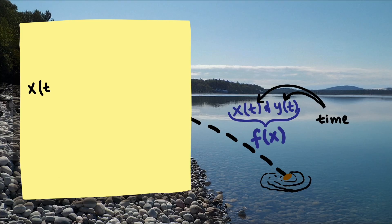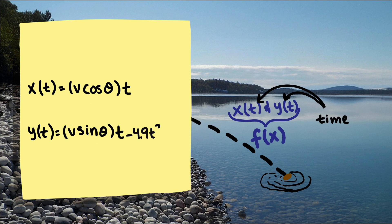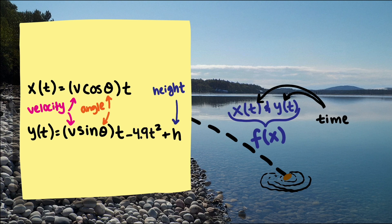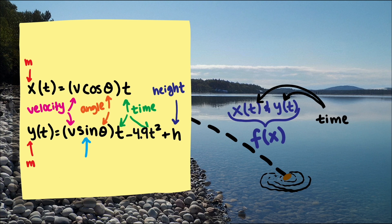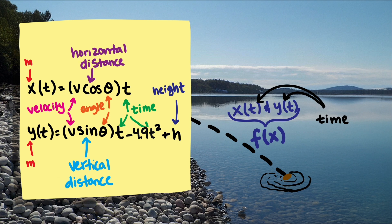For the path of the thrown object, ignoring air resistance, the x and y coordinates can be modeled by these equations, where v is the initial velocity in meters per second, theta is the angle of the throw, h is the initial height, and t is time in seconds. The units for x and y are in meters. These trig functions of sine and cosine break the velocity into horizontal and vertical components. We will use these equations to understand the angle the path of the rock makes with the water.